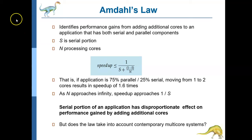Depending upon this serial portion and the number of cores, the speedup that we can achieve is given by Amdahl's formula. Here you can see the speedup: if s is the serial portion and n is the number of processing cores or threads, then the speedup is less than or equal to 1 divided by s plus (1 minus s) divided by n. So (1 minus s) is nothing but the parallel portion.